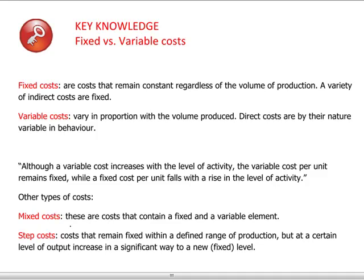Another cost category is step costs. These are costs that remain fixed over a range of activity level — remaining constant — and then jump up to a new fixed level if certain investments are made, for example to increase the capacity of production.